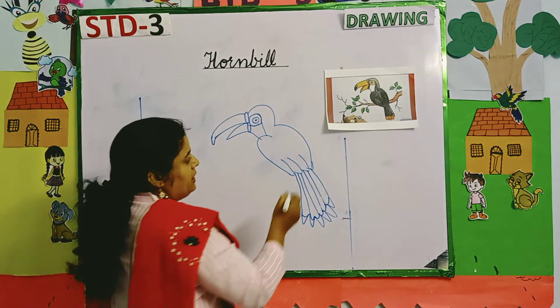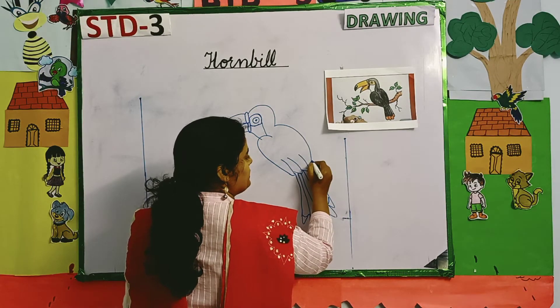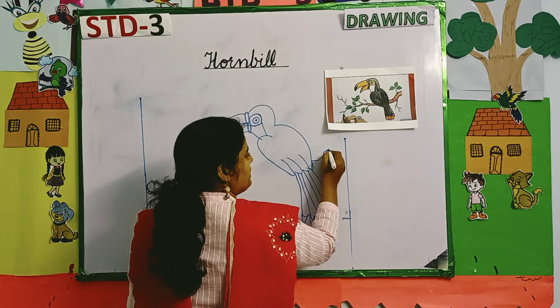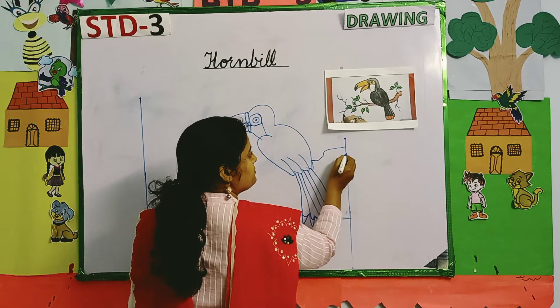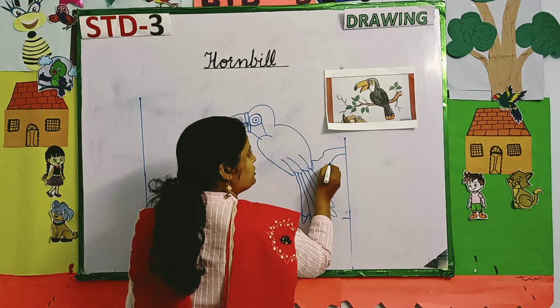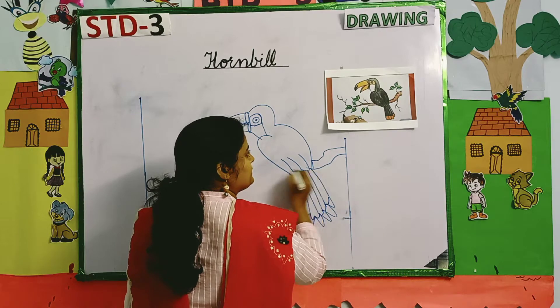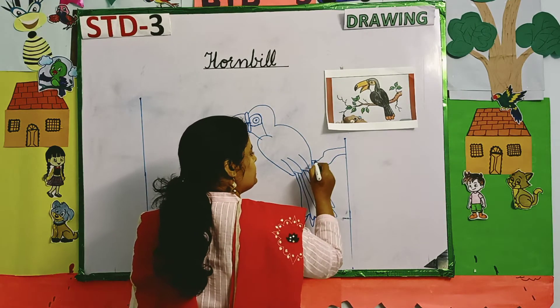After that, the branch. You can see this branch is like that, on which the bird is sitting.